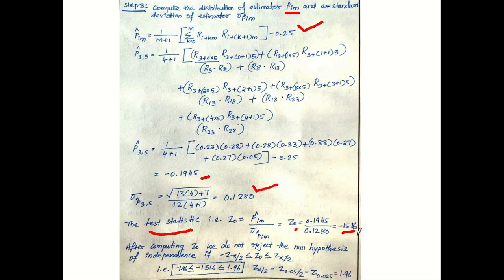Using these values, we compute the test statistic: Z0 = cap rho_iM / sigma rho_iM = −1.516. This value is compared to the critical values at alpha = 0.05, which are −1.96 and +1.96. Since −1.516 lies between −1.96 and +1.96, the null hypothesis is accepted — we do not have sufficient evidence to reject the null hypothesis of independence.